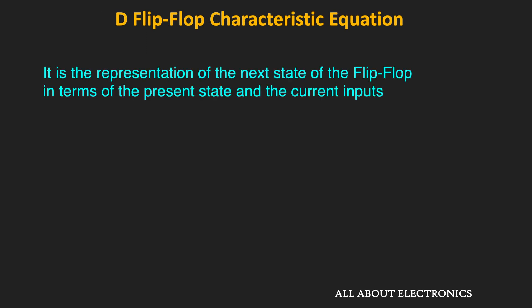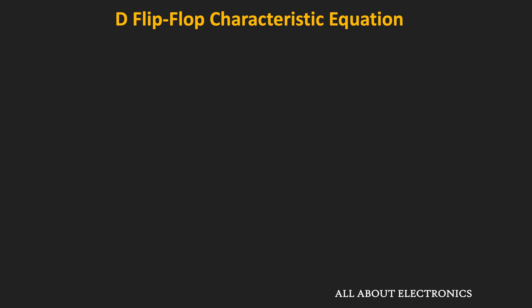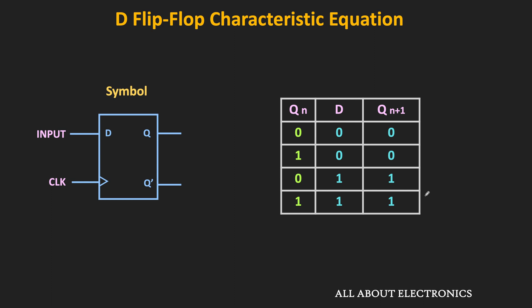The characteristic equation is basically the representation of the next state of the flip-flop in terms of the present state as well as the current inputs — it shows the behavior of the flip-flop in algebraic form. For the D flip-flop, with two variables Qn and D, there are four different input combinations. When D is 0, irrespective of the present value of Qn, in the next state Qn+1 will remain 0. And when D is 1, whether Qn is 0 or 1, in the next state Qn+1 will remain 1. Clearly, Qn+1 is the same as the D input, so the characteristic equation of the D flip-flop is Qn+1 = D.